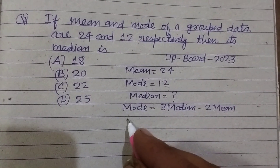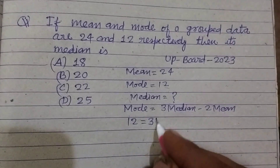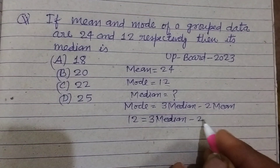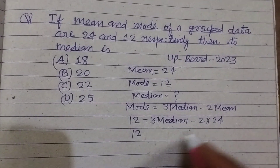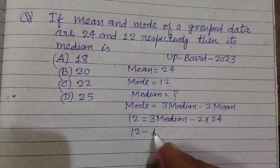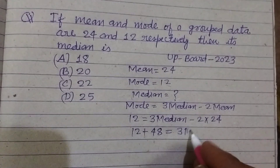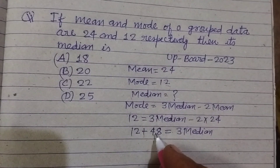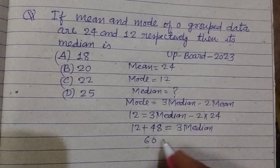We put in the respective values: mode is 12, so 12 = 3 × Median − 2 × 24. We bring the 48 to the other side — it becomes positive — so 12 + 48 = 3 × Median, which gives us 60 = 3 × Median.